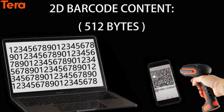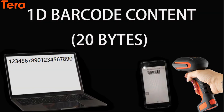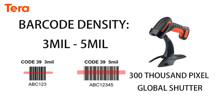If your 2D barcode content is no less than 512 bytes, or your 1D barcode content is no less than 20 bytes, it is recommended that you choose at least a 300,000-pixel global shutter barcode scanner. If the barcode density is between 3 mils to 5 mils, I highly recommend you use a 300,000-pixel global shutter barcode scanner.